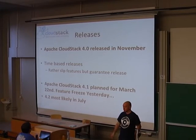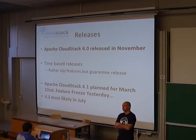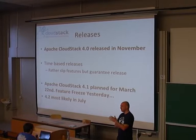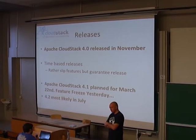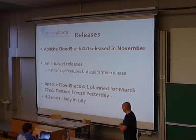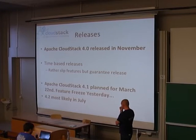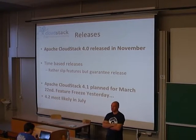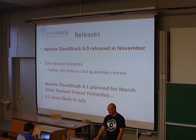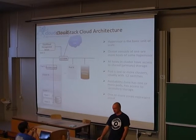In terms of releases, we did the first Apache release in November — that's CloudStack 4.0.0. We're working on time-based releases, roughly every four months. We'd rather slip a feature than slip the date. 4.1 is planned for March 22nd — feature freeze was two days ago on Friday. And you can expect 4.2 in July. So we're working toward time-based releases every four months.